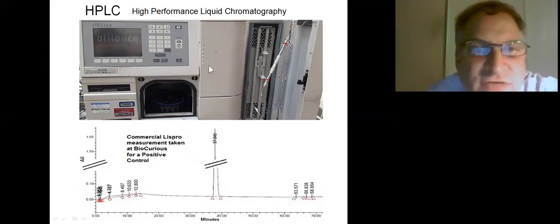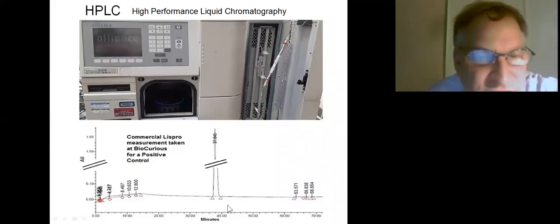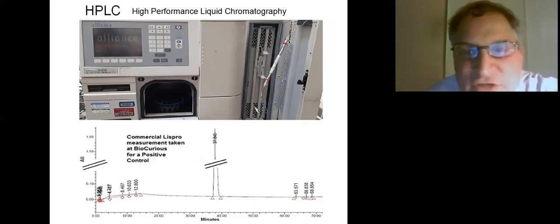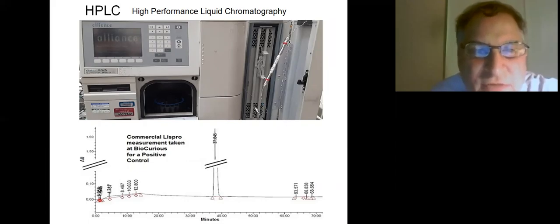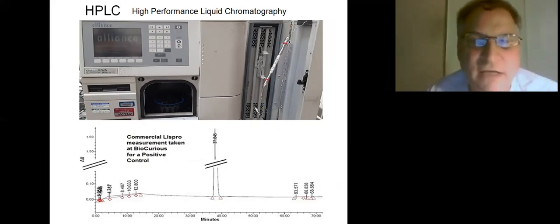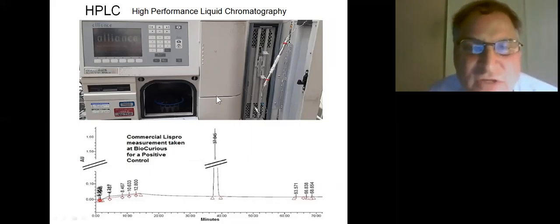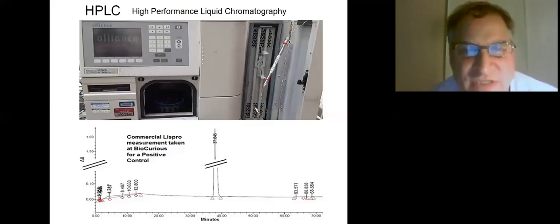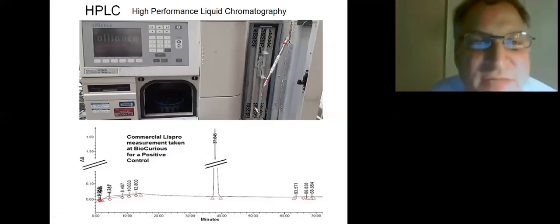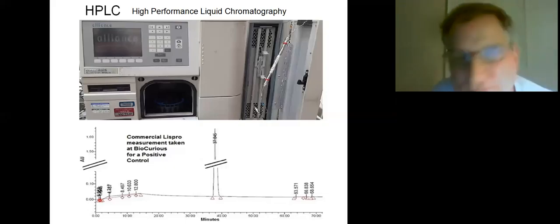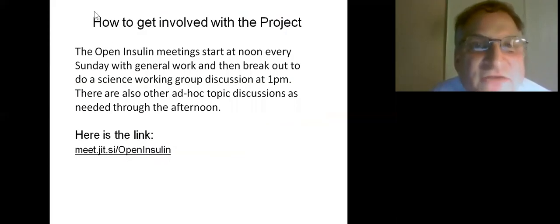The HPLC machine at CCL is the same make as the one at BioCurious, which also has the software to run it. Jay at BioCurious has already done a run with commercial Lispro to establish the expected peak. Our plan is to bring our sample there, add trypsin to separate chains A and B, and have the HPLC sample every five minutes. We would stop the trypsin at exactly the right time — once chains A and B are separated but before trypsin chews away the arginines in chain B.